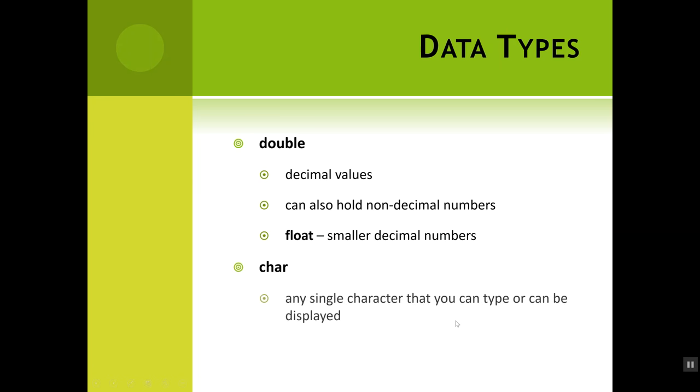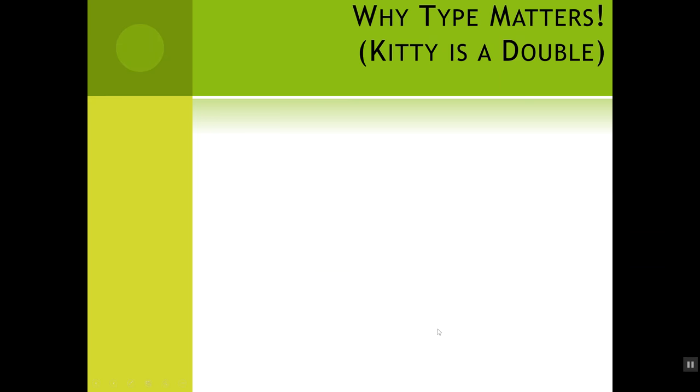There's type char, which is for a single character that you can type or that can be displayed. It can hold the letter G, or a single numeric digit like the number six, or a single piece of punctuation like a period. It can also hold things that you can't type. For example, in the console, sometimes you can show smiley faces and music notes. You can't type that from the keyboard, but you can still store it inside of a char in a program.